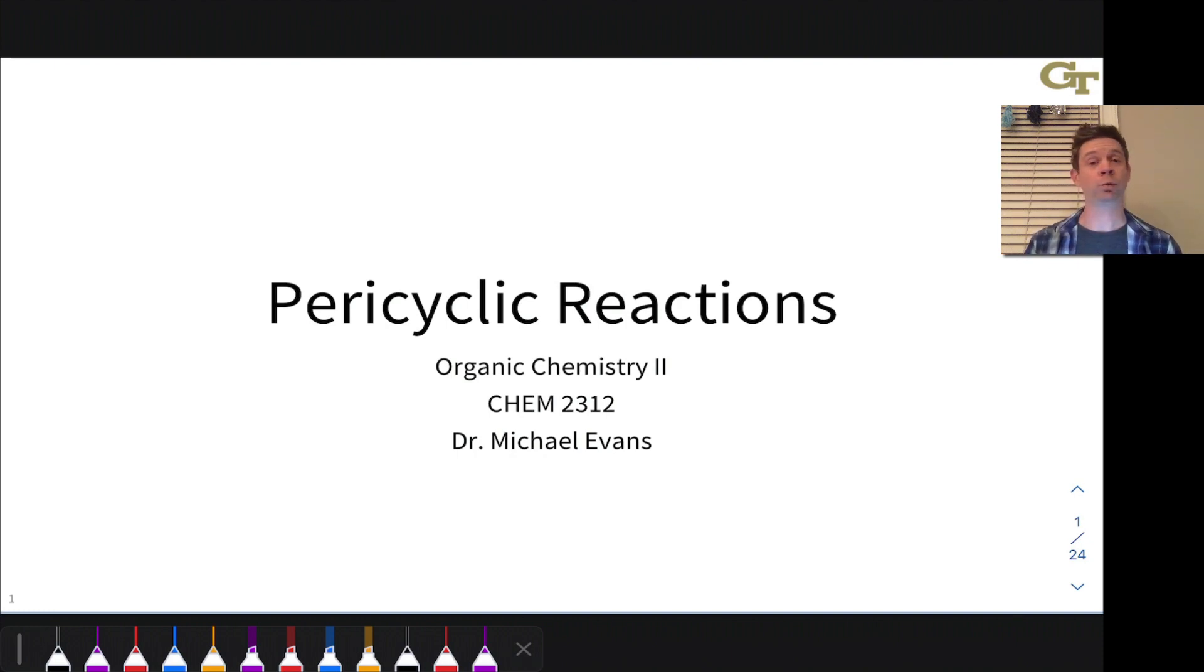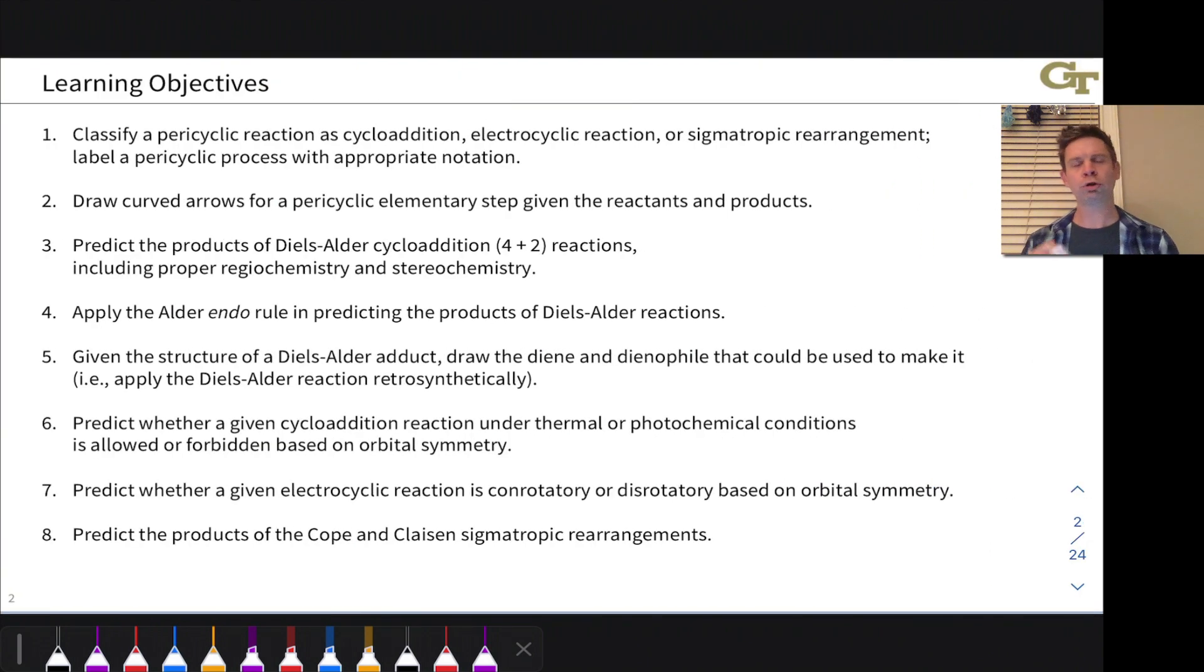Solvents would normally stabilize or destabilize cations and anions. These reactions that involve cyclic electron flow are known as pericyclic reactions, and this unit is all about this reaction type. We're going to learn about the three major classes of pericyclic reactions, the three most important: cycloadditions, electrocyclic reactions, and sigmatropic rearrangements.